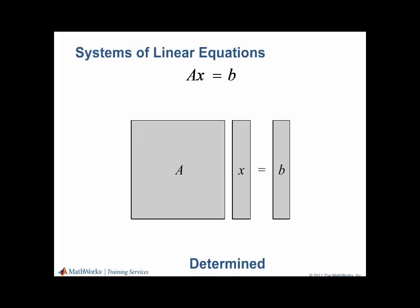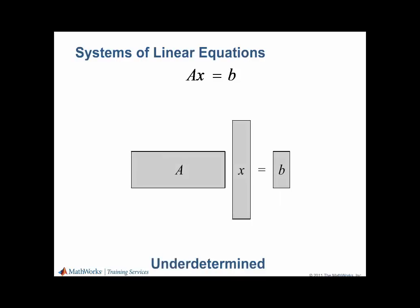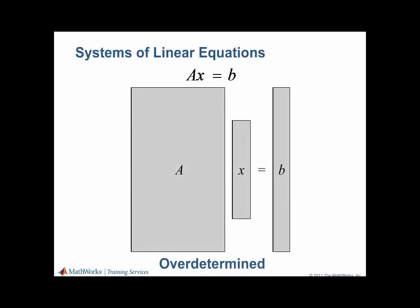Let's review the syntax for using the backslash operator to solve a determined system. A determined system is a square system of equations with full rank where the solution is unique. An underdetermined system is one in which we have fewer equations than unknowns, meaning a smaller number of rows than columns, and we can find an infinite number of solutions. We solve an underdetermined system just as we solve a determined system, and MATLAB will return a result with the maximum number of zero elements possible. An overdetermined system of linear equations has more equations than unknowns and is represented with a matrix with more rows than columns. This type of system generally has no exact solution; however, we can find the least squares fit to the given data.